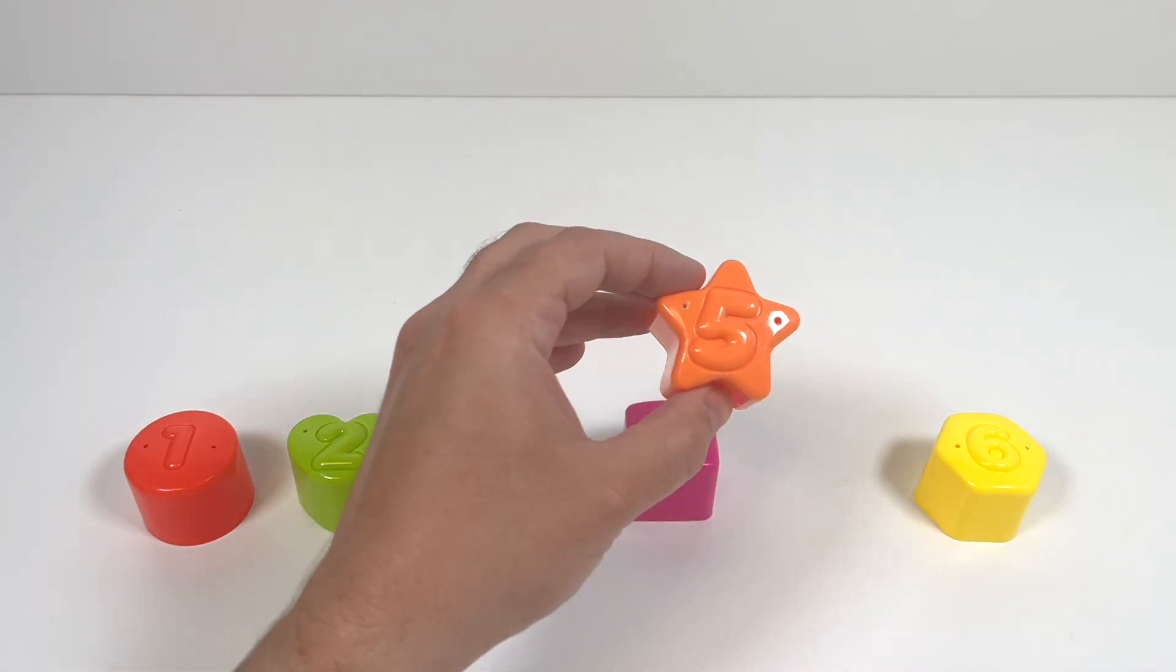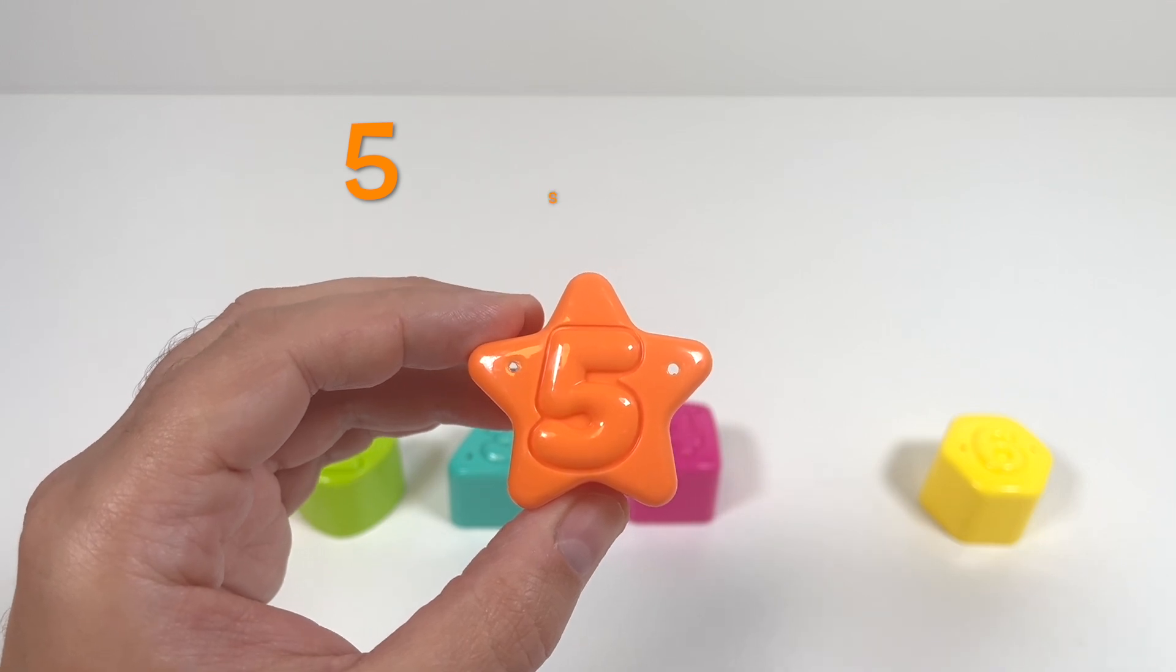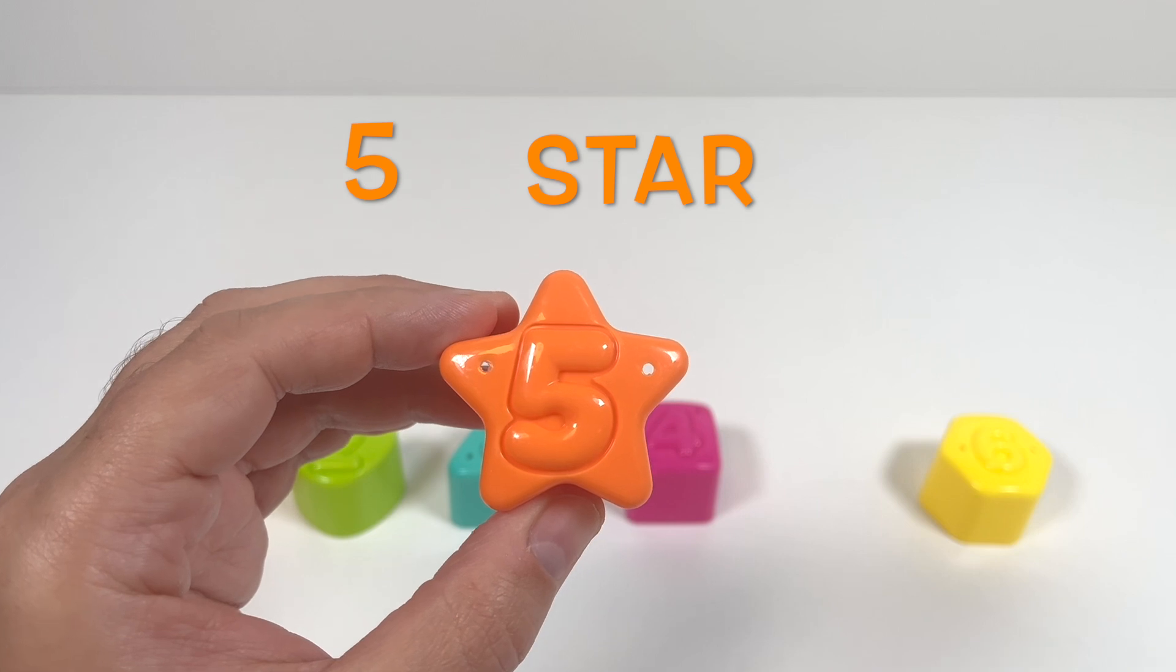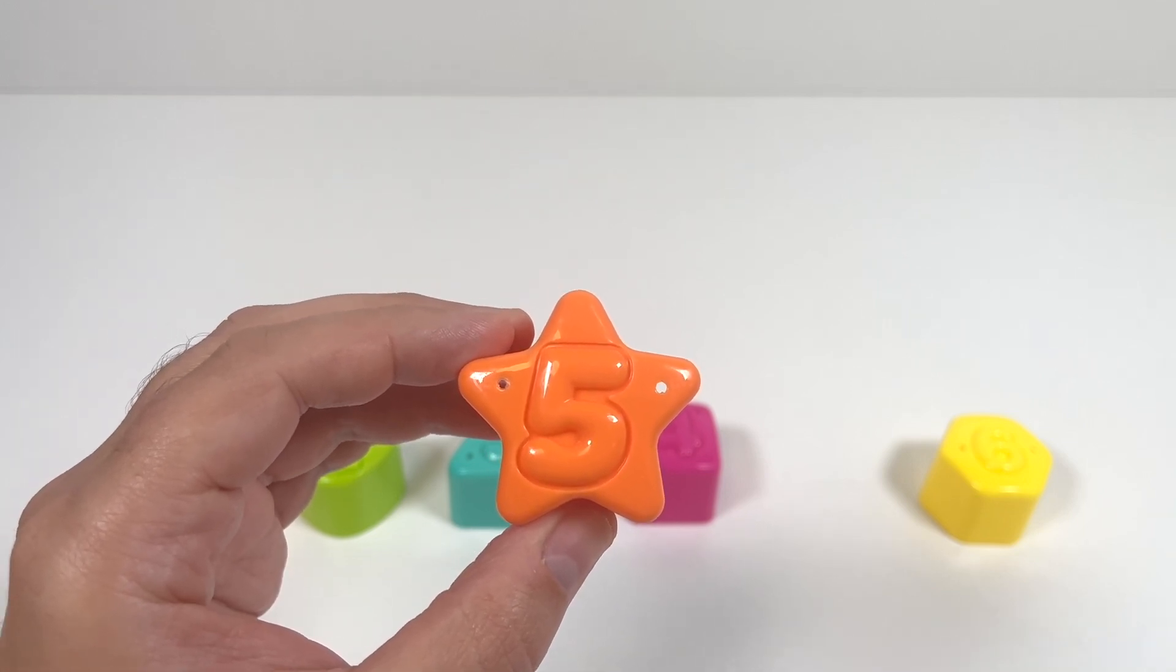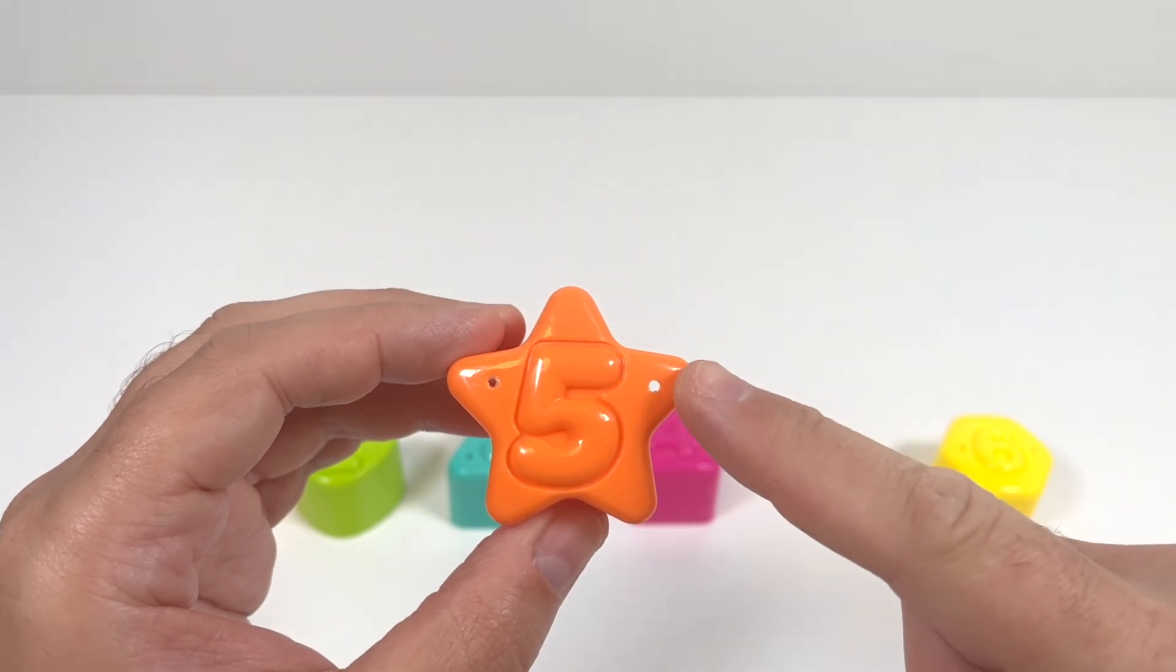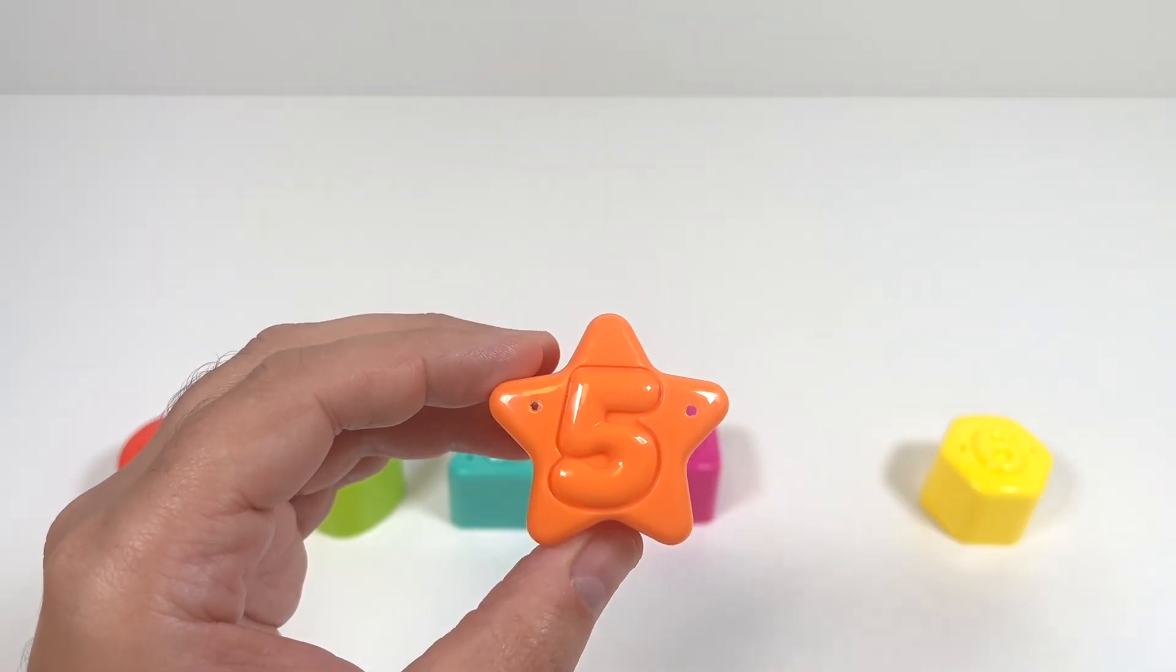Next, number 5 is an orange star. A star has five points. 1, 2, 3, 4, 5. That's our orange star.